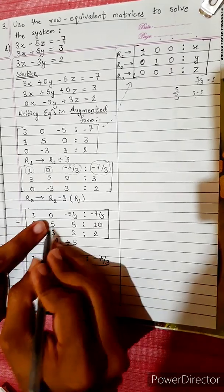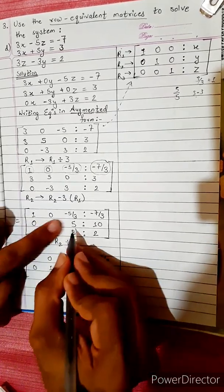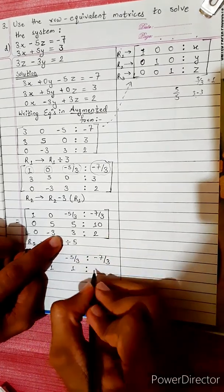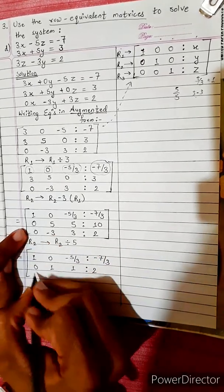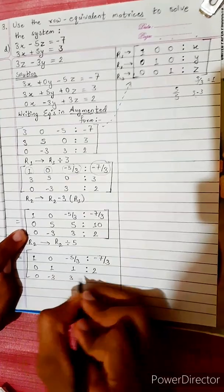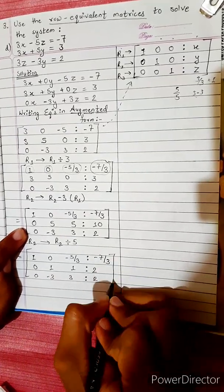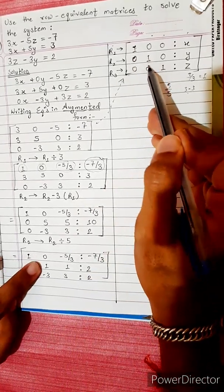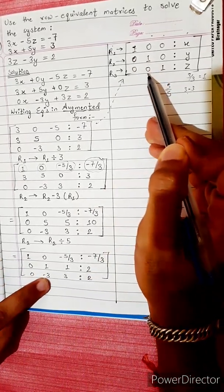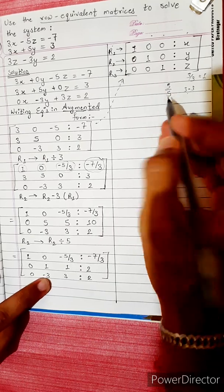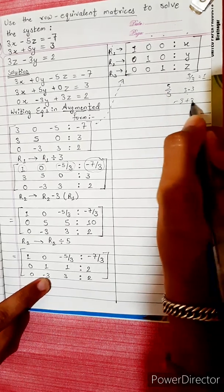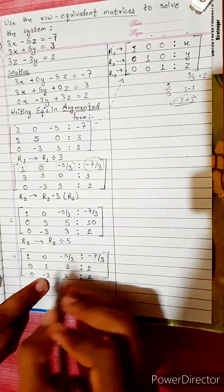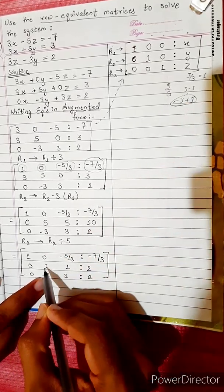After dividing R2 by 5, we get [0, 1, 1 | 2]. Now we need to make the element in R3 below the second pivot equal to 0. We need to add 3 times R2 to R3 to eliminate the -3 in the second column of R3.